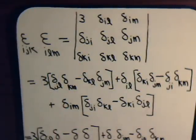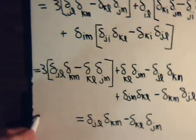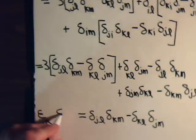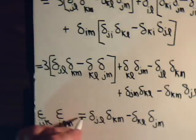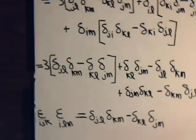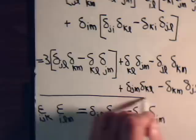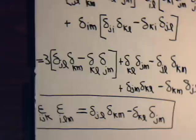So we have this equals epsilon_IJK times epsilon_ILM. And here finally is our expression: delta_JL * delta_KM minus delta_KL * delta_JM. We'll be using this in our future videos from now on.